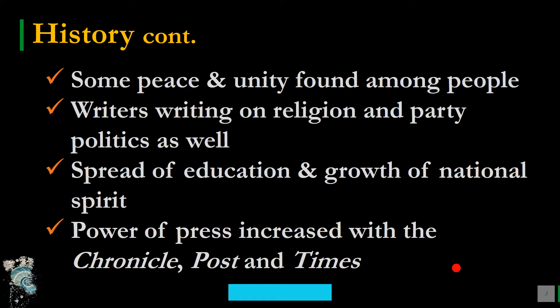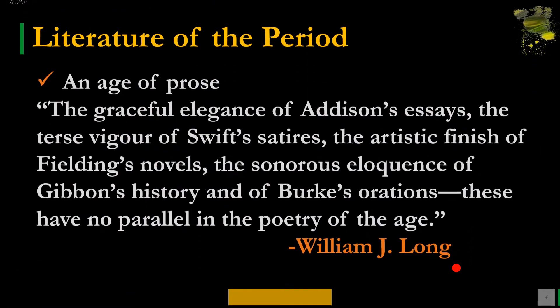The power of the press increased with newspapers and magazines like the Chronicle, Post, and Times. These magazines and newspapers played a crucial role in the development of ideas in England and the sociability of people. Now let's talk about the literature of the period — this age is marked as the Age of Prose.